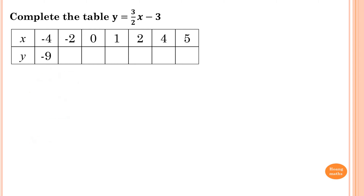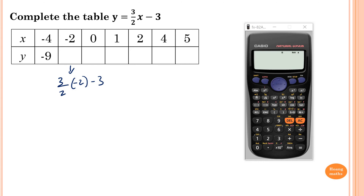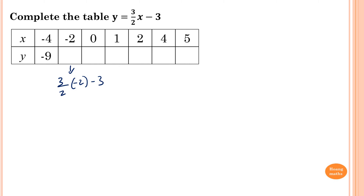When x is equal to negative 2, I'll show you how to use the calculator. I type 3 over 2, then bracket negative 2, and then minus 3. You type exactly what you write on paper — and the answer is negative 6.